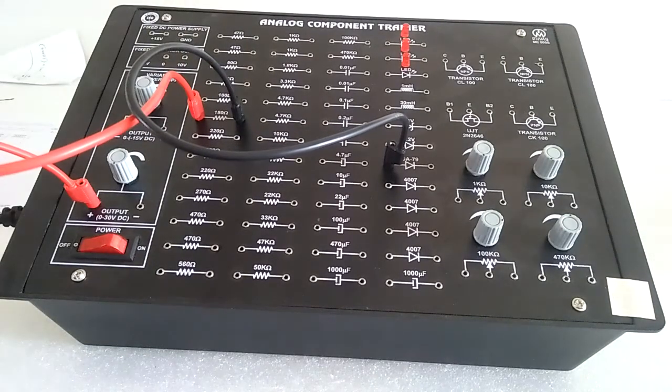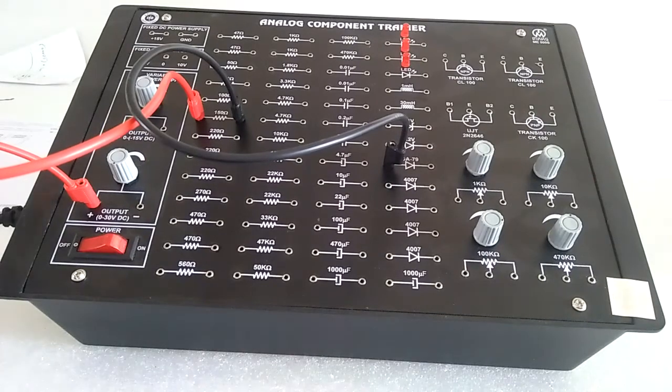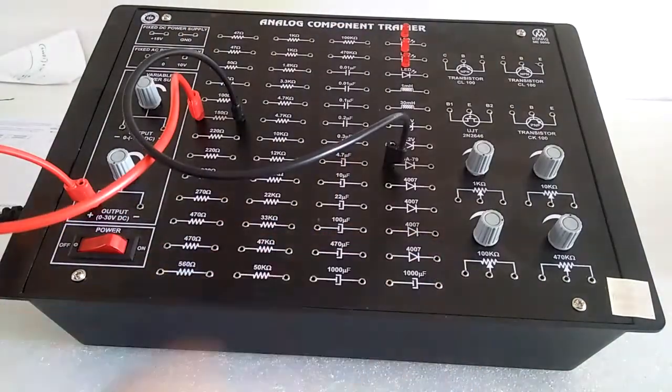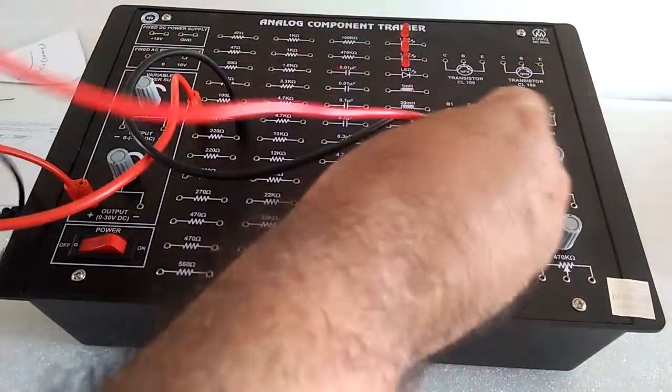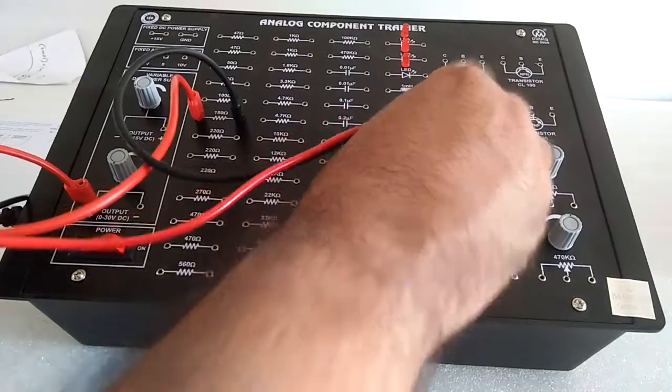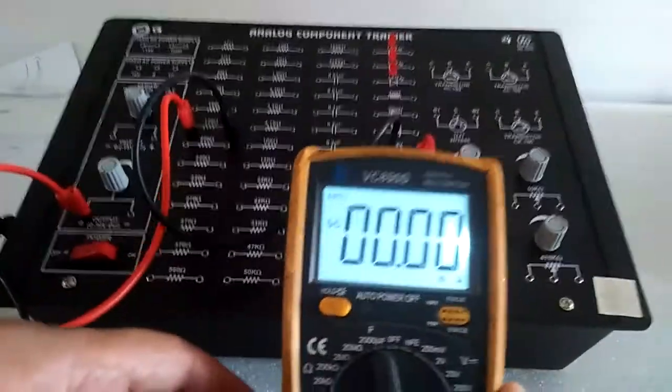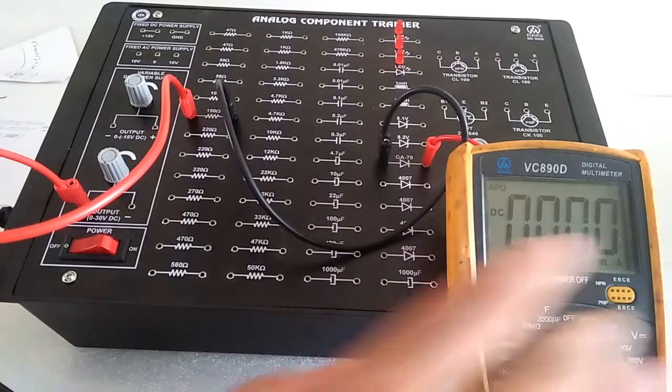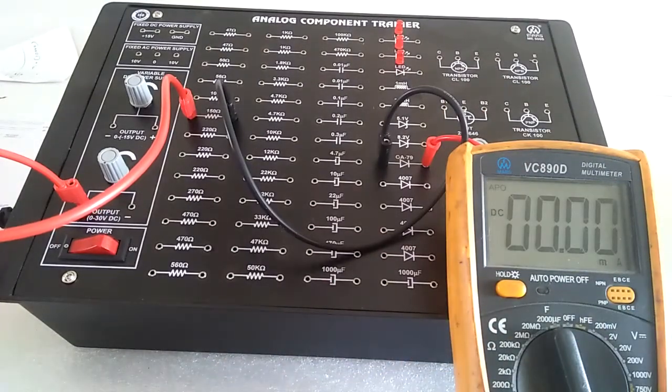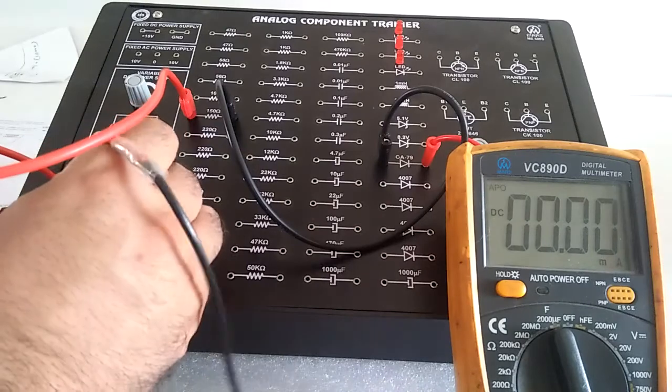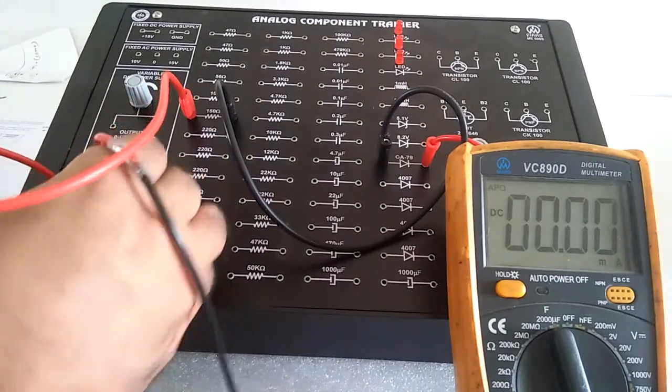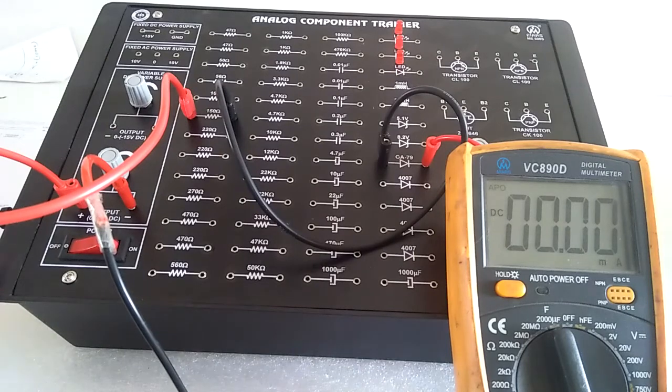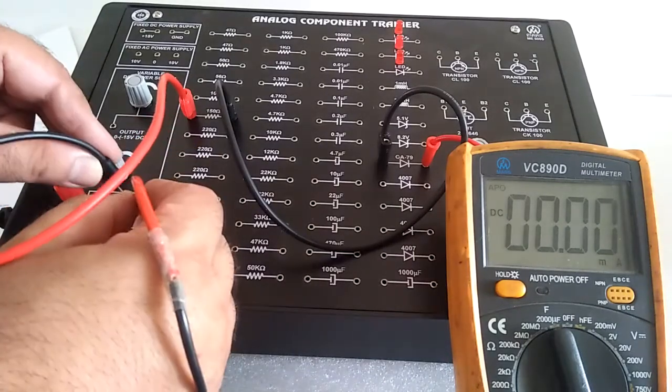Then we have to add the current meter here. Positive current meter over here, and the other end goes to output supply. Now connect the voltmeter in parallel.